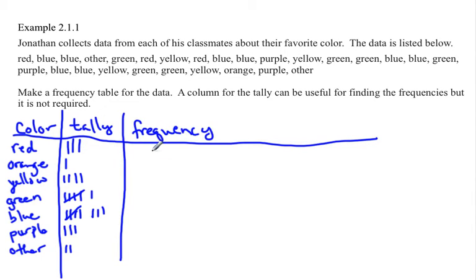And we just write down how many numbers there are. So there were three people who liked red, one person who liked orange, four who liked yellow, six who liked green, nine who liked blue—sorry, eight who liked blue, obviously can't count—three who like purple, and two who like some other color.